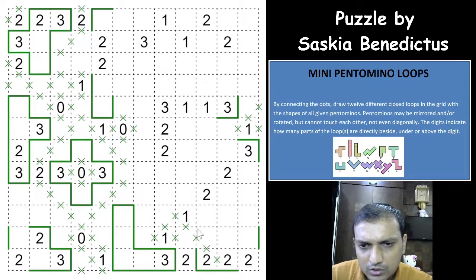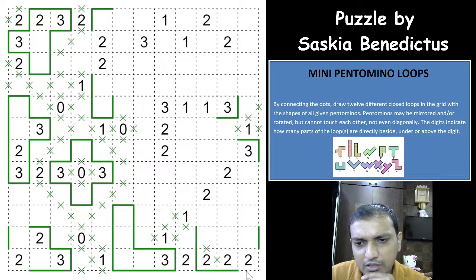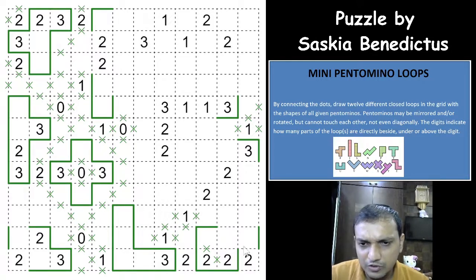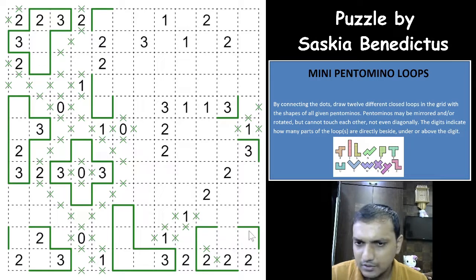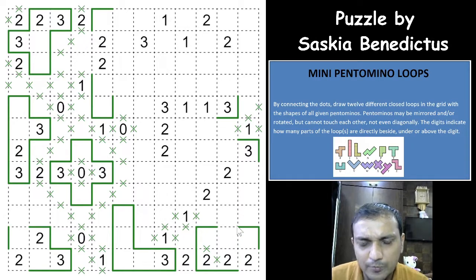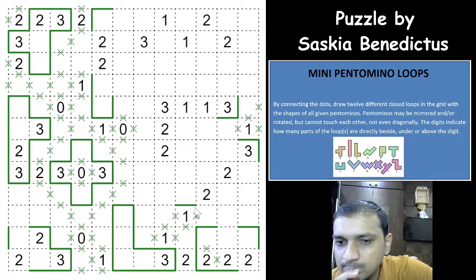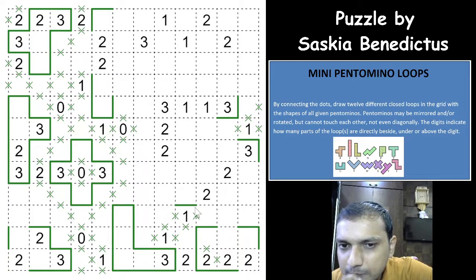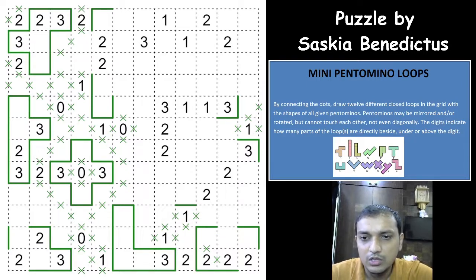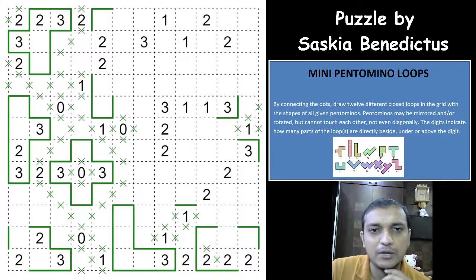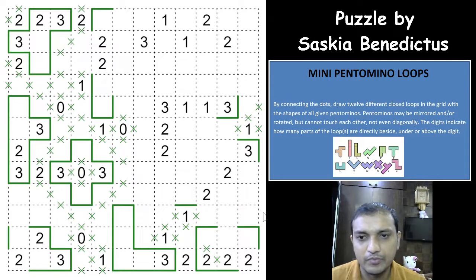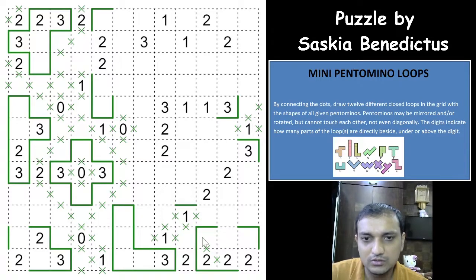Cross out here. This will go up and meet either this way or this way — in both cases, this cannot go towards the top. If it goes this way, you form a P pentomino; if it goes this way, you form a U pentomino. We'll keep it as is for now with a loop segment here. This puzzle is quite difficult — even until this point it was not easy to crack the pentominoes. How many pentominoes have we got? Six. And obvious pentominoes are four.